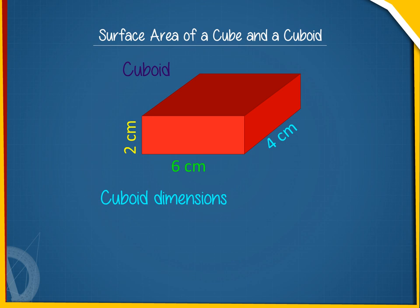If a cuboid is of dimensions L into B into H, then its surface area is 2 into LB plus BH plus LH square units.